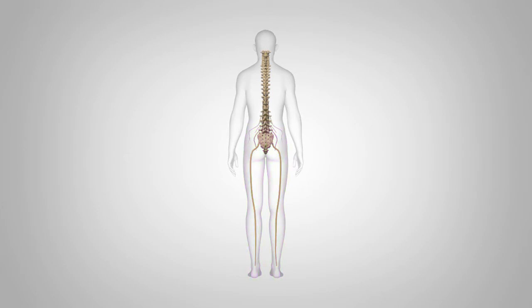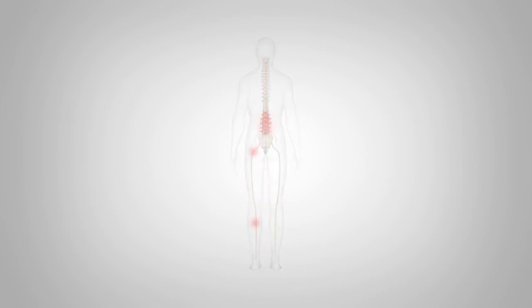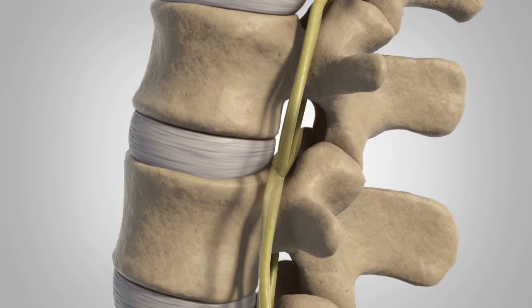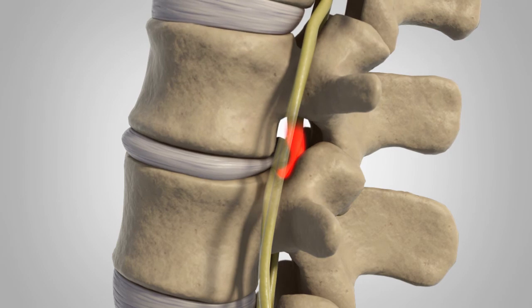When a spinal nerve is irritated or injured, a person may experience radiculopathy. For example, if a spinal nerve in the lumbar region is irritated, radiating pain may be experienced along the nerve route, which begins at the lower back and travels to the leg. Radiculopathy is most commonly the result of a condition affecting the disc, such as a bulging or herniated disc that presses against the spinal nerves.